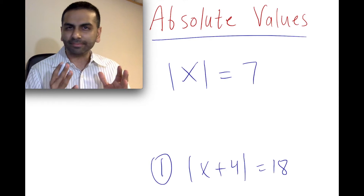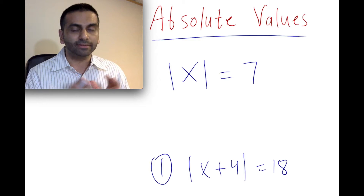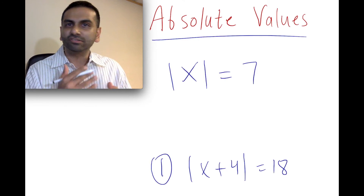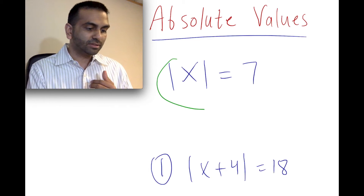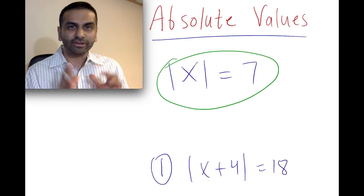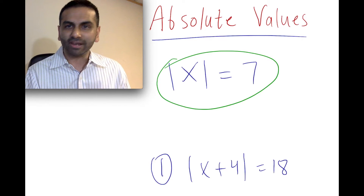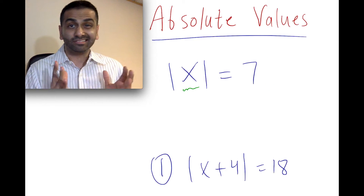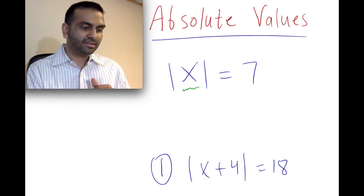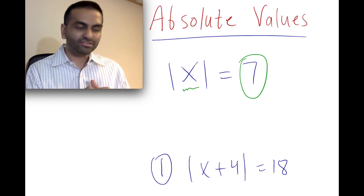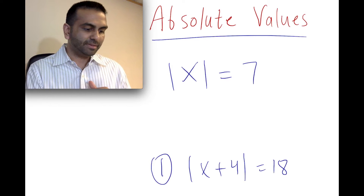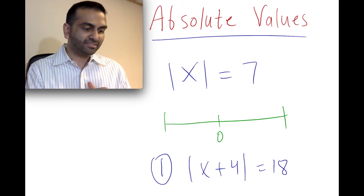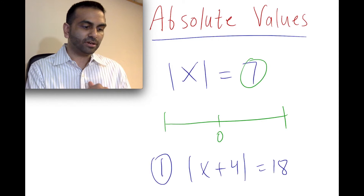So first of all, what does absolute value mean? Well, it means distance — specifically distance from zero. So looking at this expression, absolute value of x equals seven. What this means is that x is some number whose distance from zero is equal to seven. If we had a number line, x is exactly seven units away from zero.